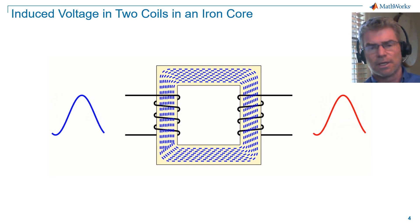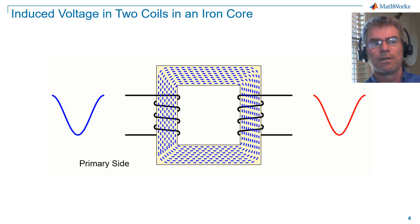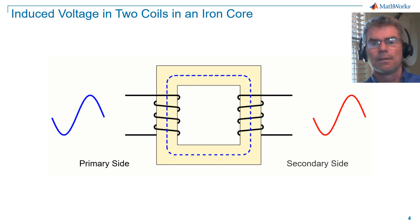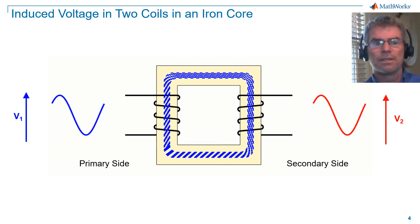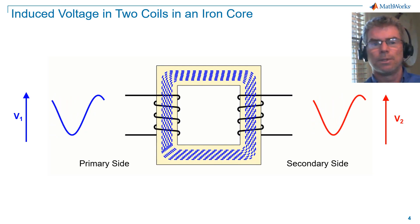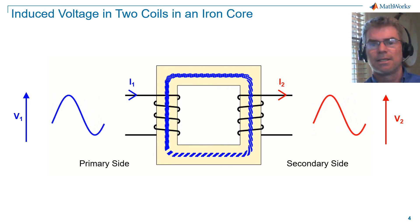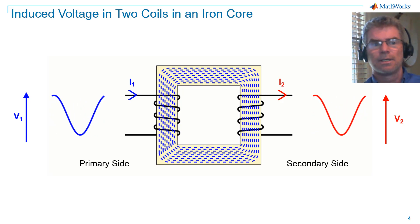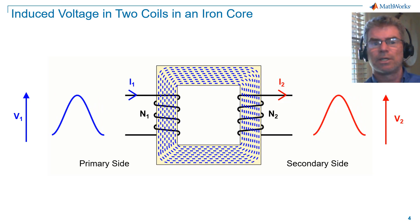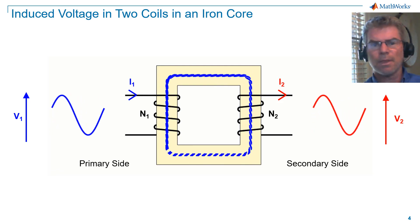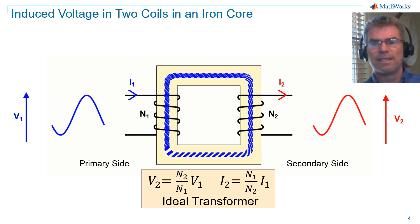Now let's orient ourselves around this system. We call the supply side of the transformer the primary side. The load side is called the secondary side. We have voltage V1 at the primary side and V2 at the secondary side, current I1 at the primary side and I2 at the secondary side, and the primary coil has N1 turns and the secondary coil has N2 turns. We now have all the information we need to write the equations for an ideal transformer.